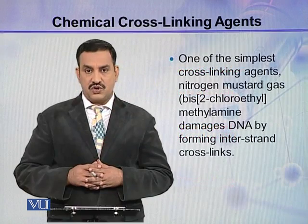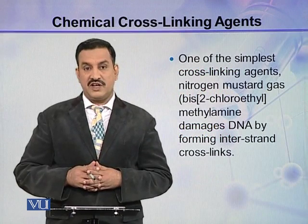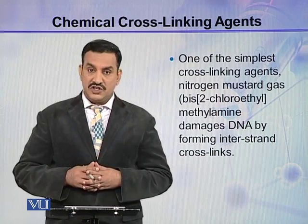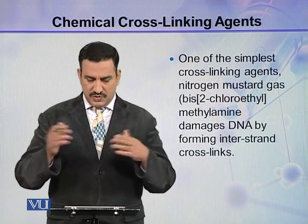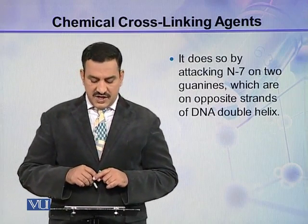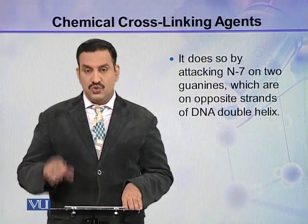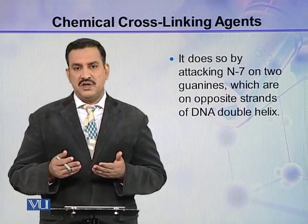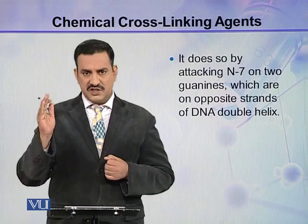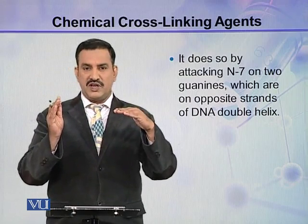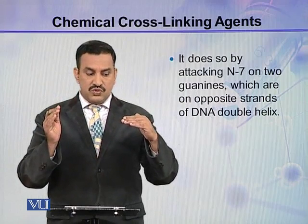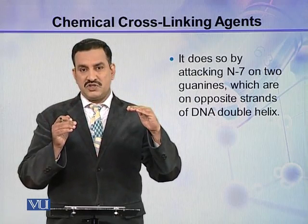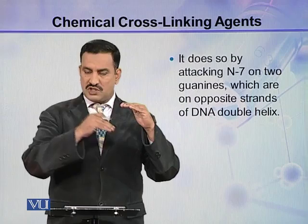One of the simplest crosslinking agents is nitrogen mustard gas, which is bis(2-chloroethyl)methylamine. It damages DNA by forming interstrand crosslinks between two strands. It does so by attacking N7 on two guanines which are present on the opposite strands of the DNA double helix. On one side a guanine is present, and exactly opposite will be cytosine, but adjacent to that cytosine another guanine may be present on the neighboring strand. So nitrogen mustard gas forms an interstrand crosslink between these two guanines.